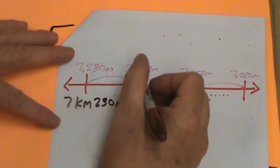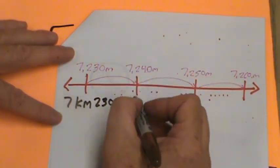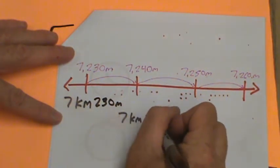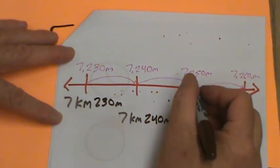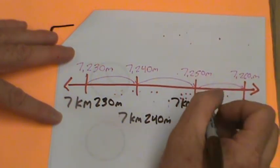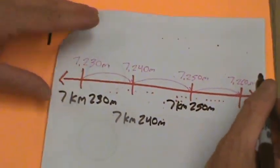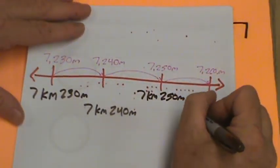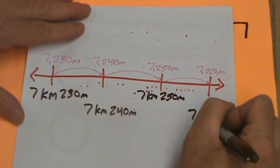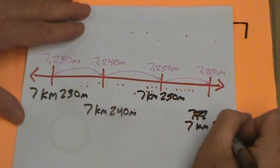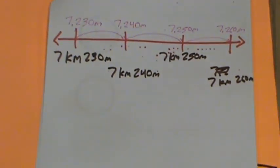230 meters. Down here, we know it's 7,000, right? So that's 7 km, 240 meters. Over here, 7 km, 250 meters. And you could probably get this one on your own, I'm sure. So let's do 7,200, oops, 7 km, 260 meters. See how that works?